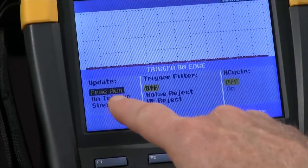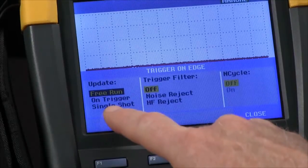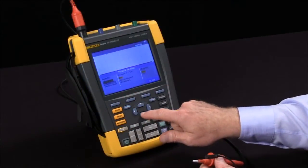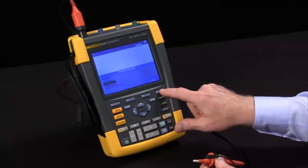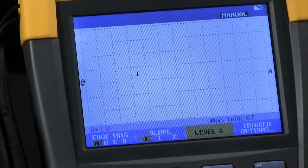I want to change from free run which lets the scope run all the time to on trigger where it waits for a trigger event. With that done, I'll close the window and I should be ready.